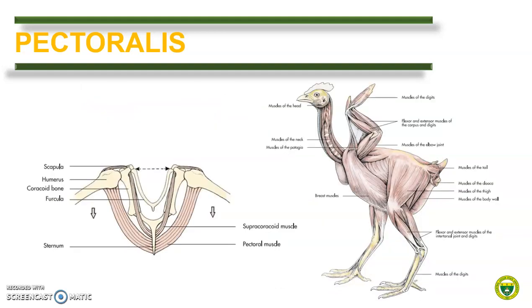Most of the modification in birds' musculature is present in the pectorals. Relative to its body, the pectoralis muscle of birds occupies the entire breast area of the bird. This is because the pectoralis is the one responsible for the downbeat during the flapping of the wings. On the other hand, the supracoracoideus muscle is developed for the upbeat movement of the wings.